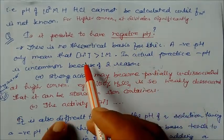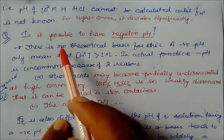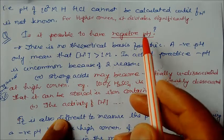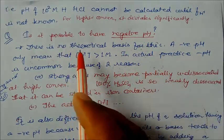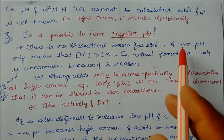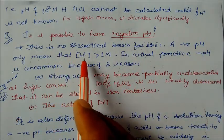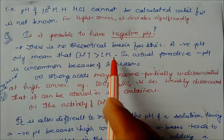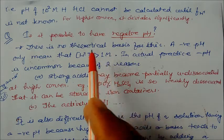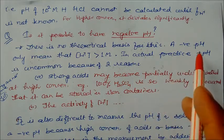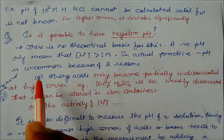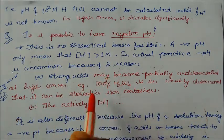Now one more doubt students normally face: is it possible to have negative pH? Mathematically there is no theoretical basis for this, but mathematically it is possible. Negative pH only means that the concentration of H+ will be greater than 1 molarity.